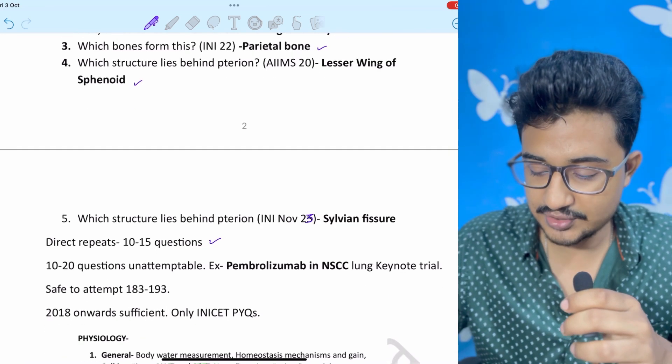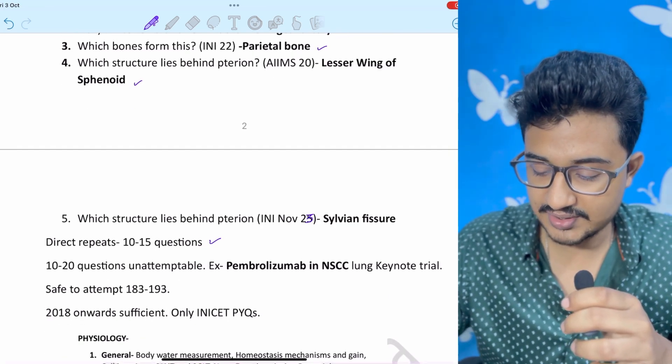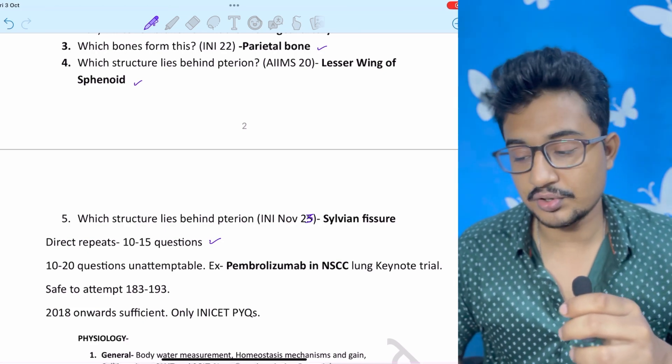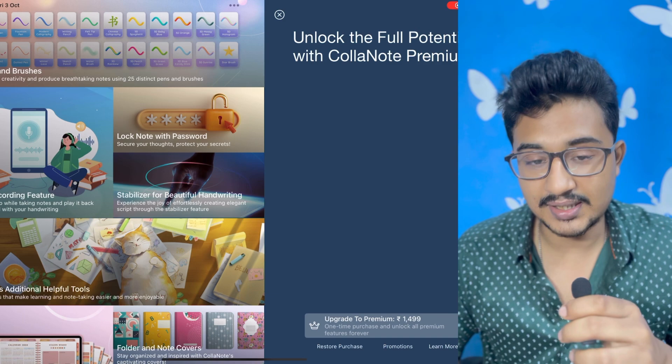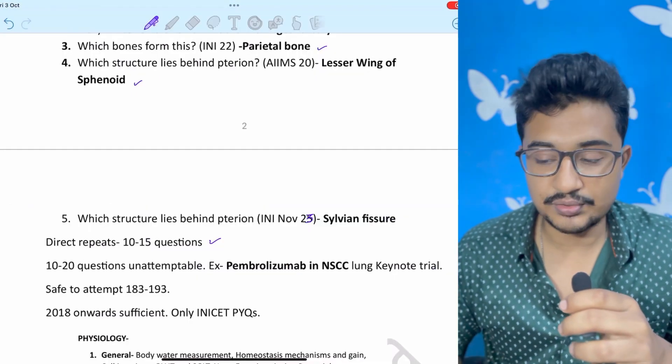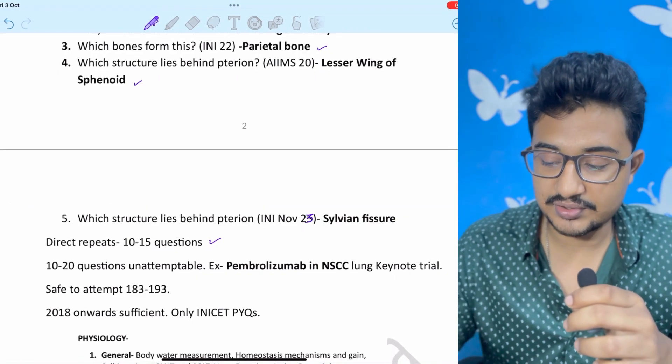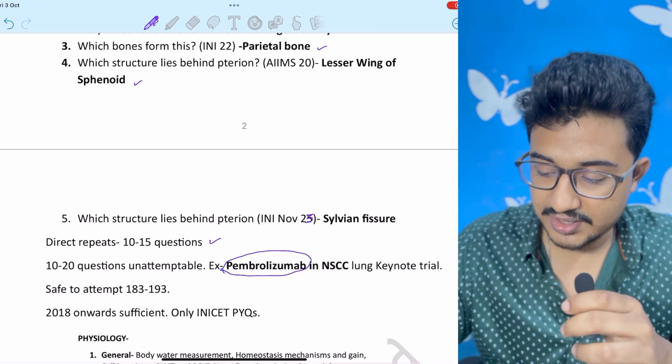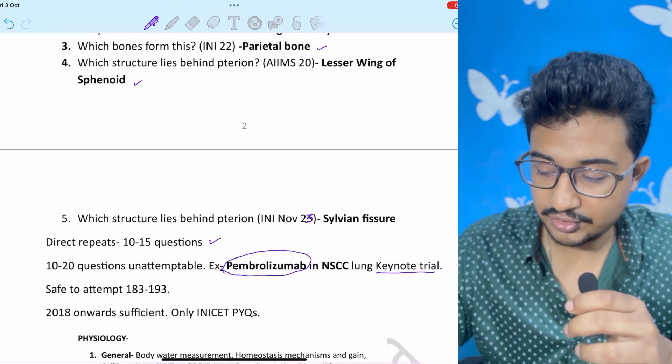Direct repeats you will get 10 to 15 questions. 10 to 20 questions will be unattemptable. Like Pembrolizumab in non-small cell lung cancer. It was the keynote trial. It was asked that keynote trial is for the Pembrolizumab immune checkpoint inhibitor. It is a previous year topic.